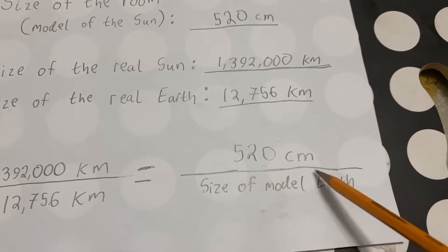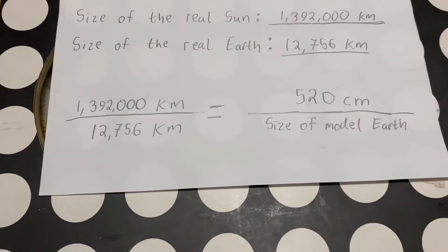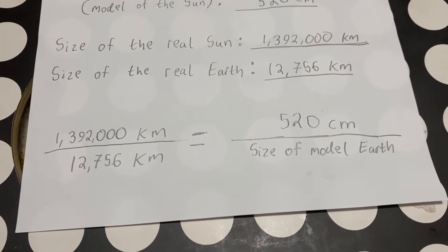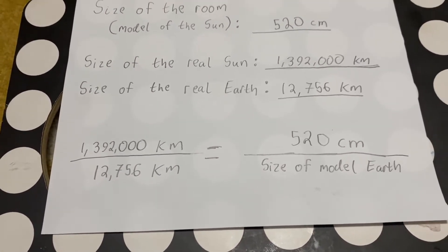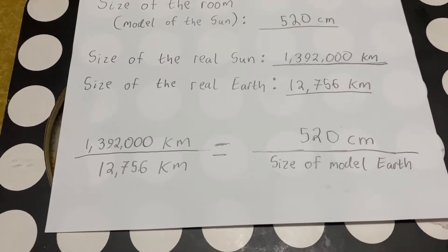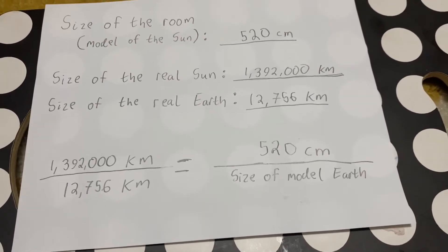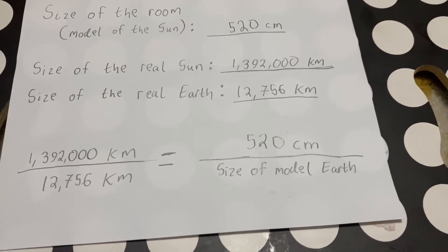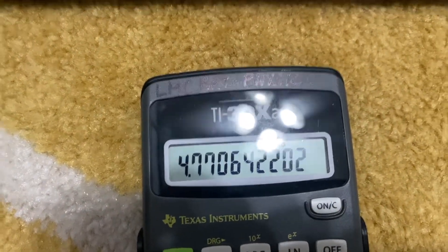That means we just have one unknown in this equation: the size of the model Earth. The best way to solve for it is probably to do some cross multiplication and move things around. When you do, you take 1,392,000 divided by 12,756, which gives you about 109. So in terms of linear length — diameter — the sun is about 110 times bigger than the Earth. That means any model of the Earth needs to be 110 times smaller than this room.